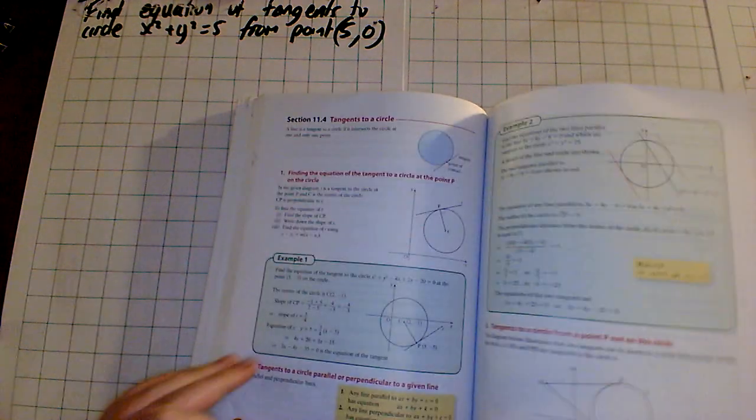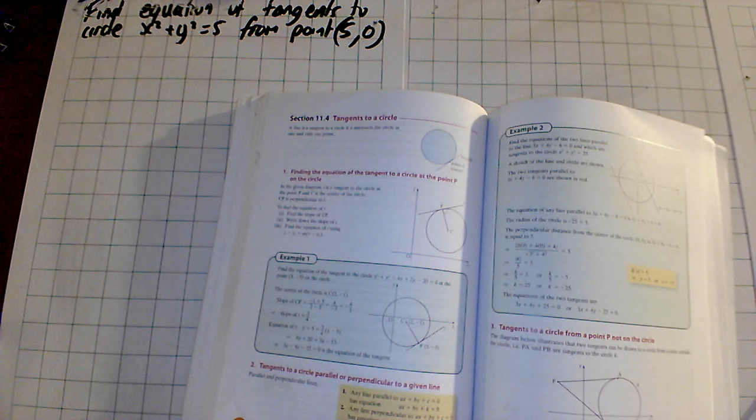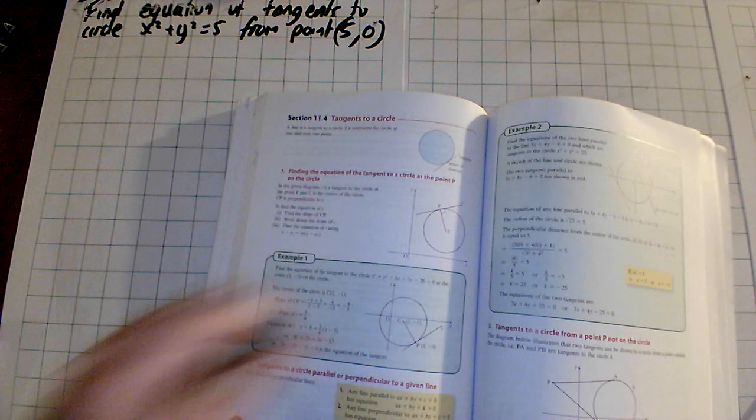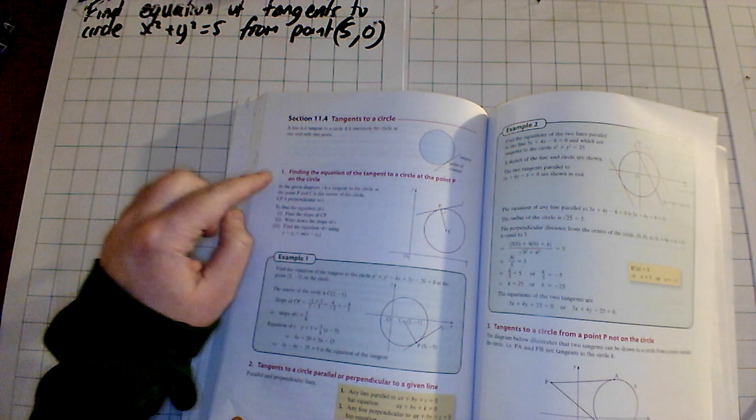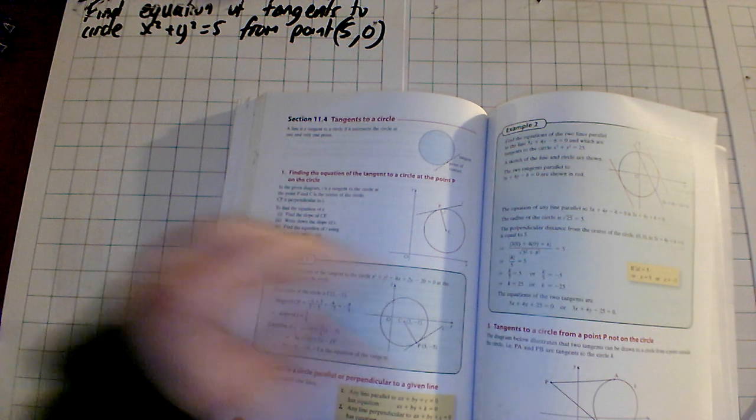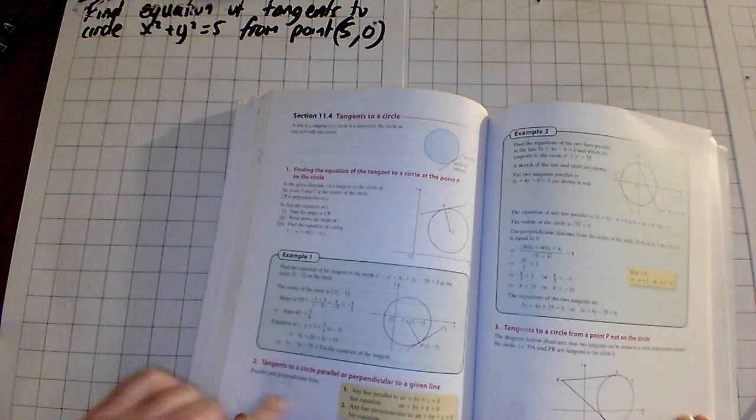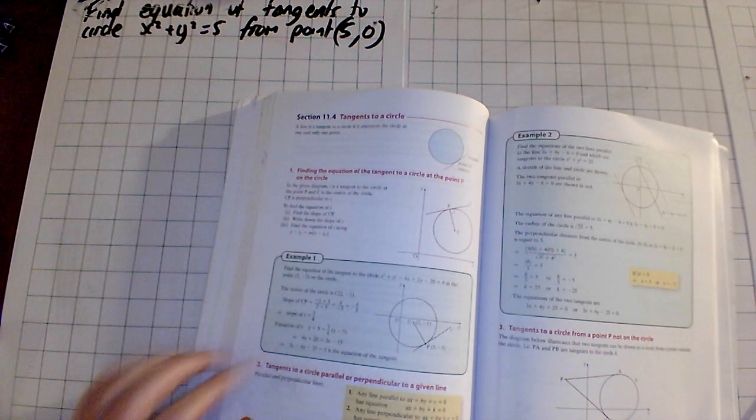We are going to continue on where we left off. We are on tangents of a circle, or tangents to a circle, on page 436, section 11.4. We had actually done the first one and we had done this example and the second type with a little subheading. This was just the last thing we did.